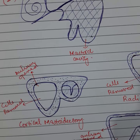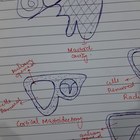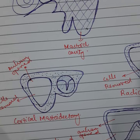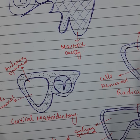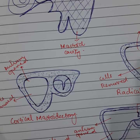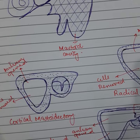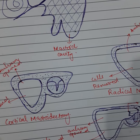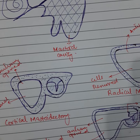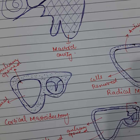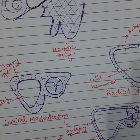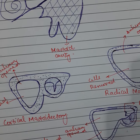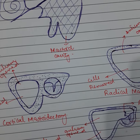Indications for cortical mastoidectomy are: acute coalescent mastoiditis, incompletely resolved acute otitis media with reservoir signs and masked mastoiditis, and as an initial step to perform endolymphatic sac surgery, decompression of the facial nerve, and translabyrinthine or retrolabyrinthine procedures for acoustic neuroma.